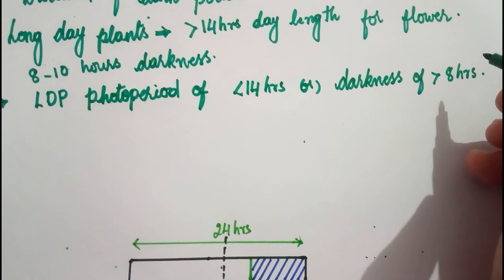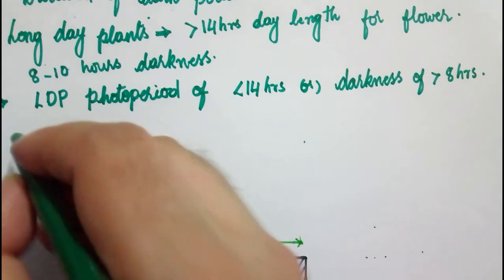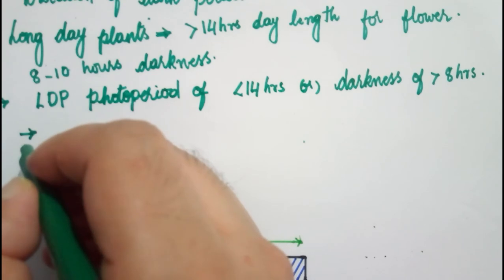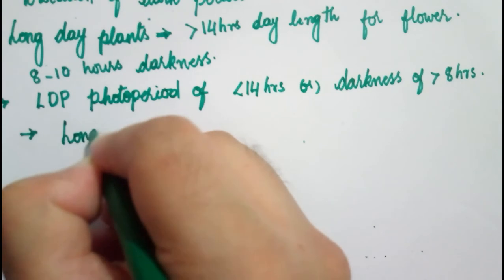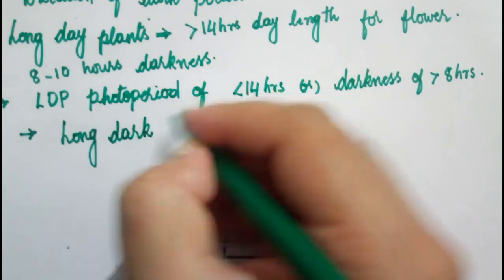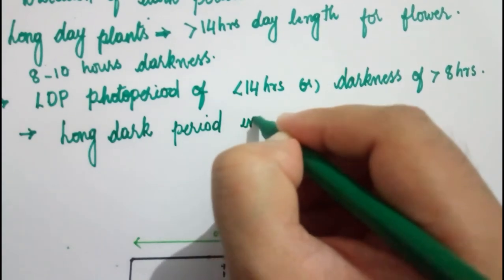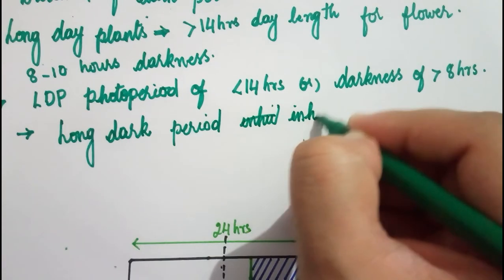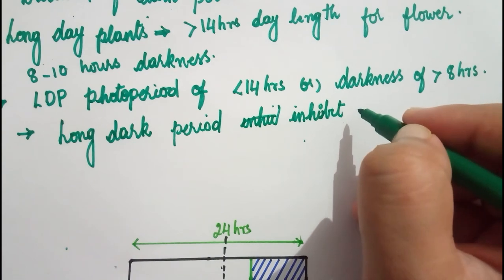When a long dark period is given, long dark periods will inhibit flowering in long day plants. So if the night duration is very long, flowering is inhibited in long day plants.